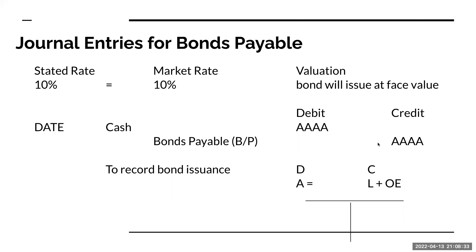When the stated rate of interest on the bond — that's the amount of interest the bond is going to pay out — if the stated rate is equal to the market rate, the cash that I receive is going to be the same amount as the face value of the bond payable. So the bond is going to issue at face value.